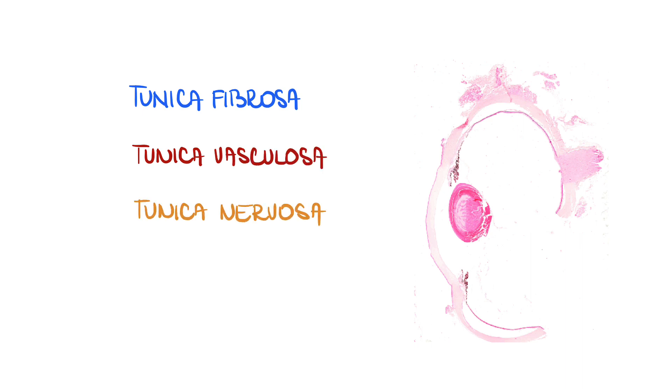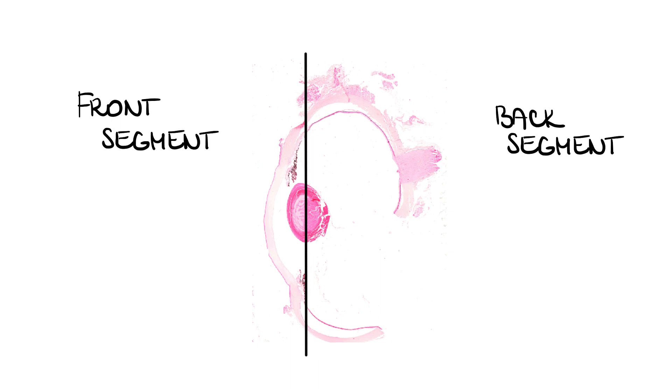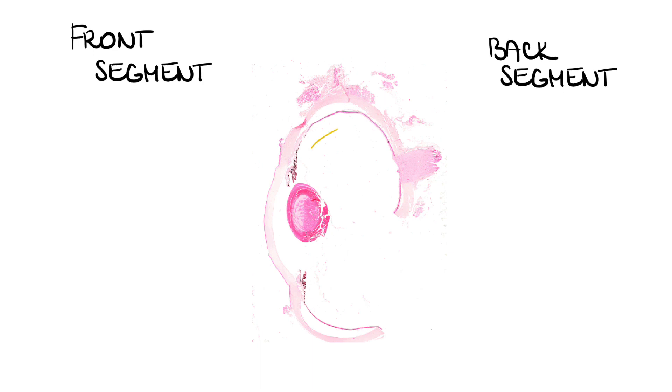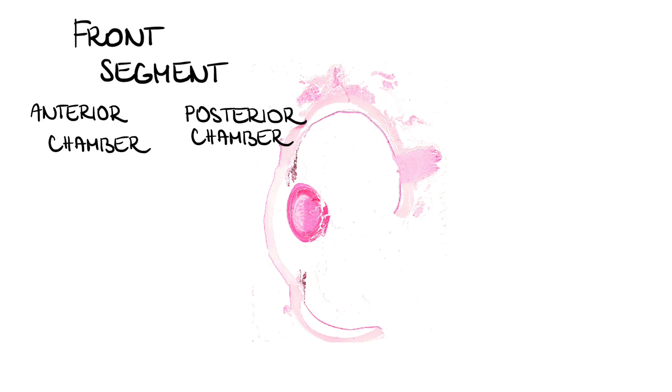Before we get into the histological structure itself, I would like to remind you of the basic components of the eye such as the tunica fibrosa, vasculosa and nervosa. Not every structure of the eye can be assigned to one of these categories, but we will go through them step by step. The eye is further divided into the front and the back segment, while the border is represented by the lens. The posterior segment is filled with vitreous humor, and the anterior segment is divided into an anterior and posterior chamber in which the aqueous humor circulates. We will talk about this in the next video.